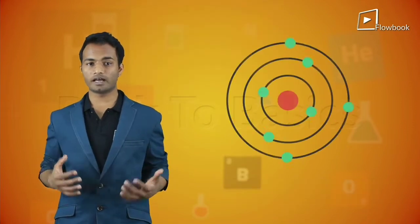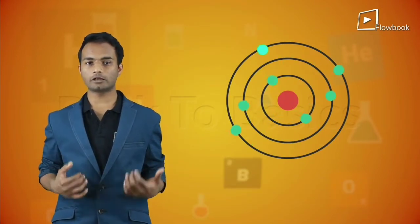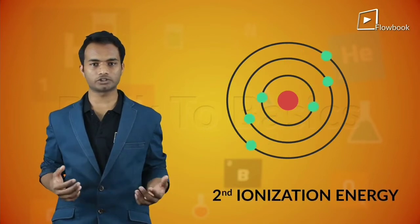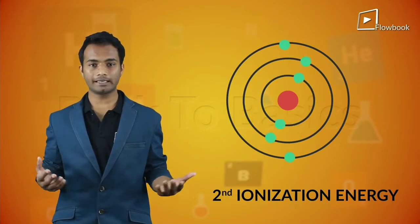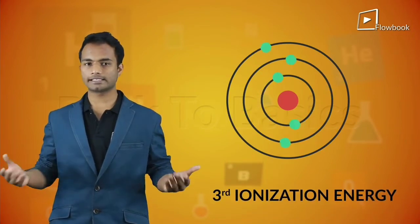If you want to remove another electron from an atom, that would be its second ionization energy. If you want to remove the third electron, that would be its third ionization energy, and so on.